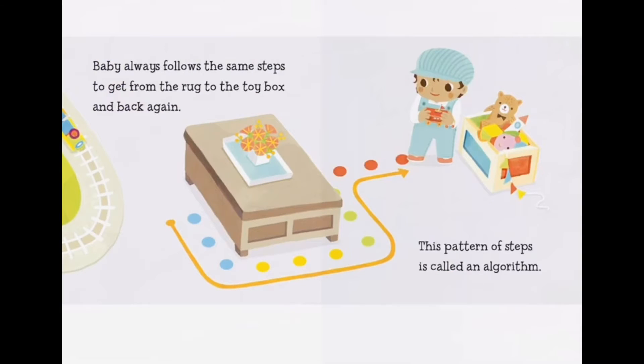Baby always follows the same steps to get from the world to the toy box and back again. This pattern of steps is called an algorithm.